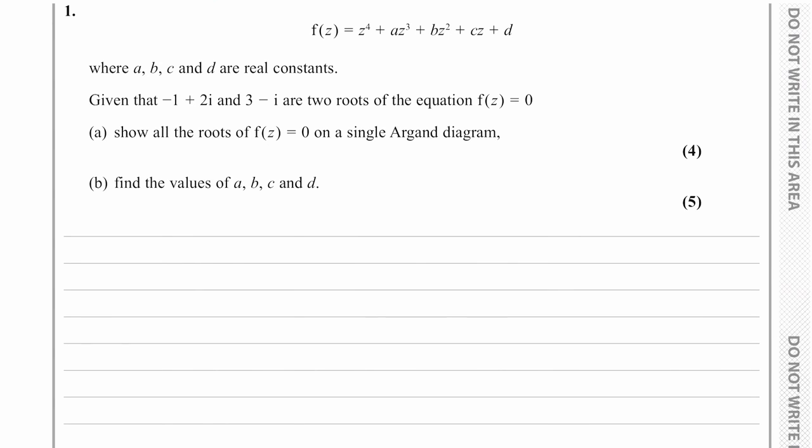In this question we're given f of z equals z to the fourth plus a z cubed plus b z squared plus c z plus d, where a, b, c, and d are real constants. We're given that this has roots at negative one plus two i and three minus i. We've been asked to show all the roots of the function on a single Argand diagram.